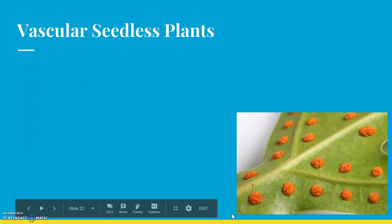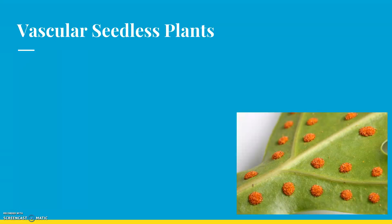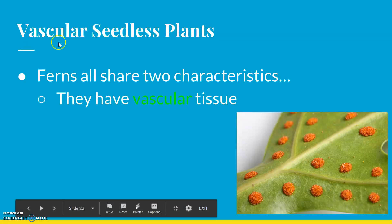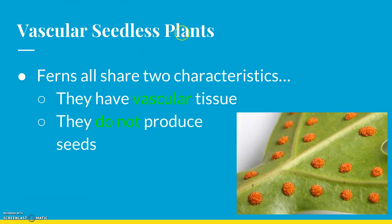The other type we're going to talk about today is vascular seedless. Vascular means it has that tissue — it's going to have the tubes that move the water. Seedless means it does not have seeds. Those two words are pretty easy to understand. The one organism we need you to know here are ferns. Ferns share two things: they have vascular tissue, and they don't produce seeds. So vascular, seedless — those two things are super easy.